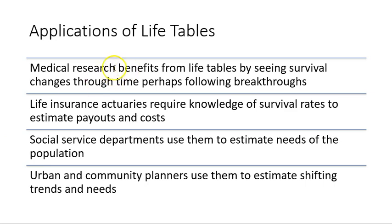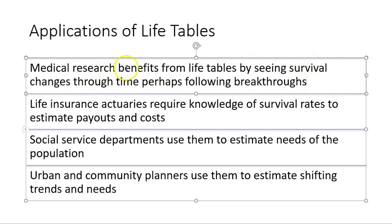Life tables are used in the medical field. Medical research might want to look at how survival rates have been altered after the introduction of a life-saving drug. Of course, life insurance actuaries have a pretty lucrative occupation. Their job is to calculate survival rates based on different circumstances as they underwrite life insurance policies, actually predicting the odds of members of a population surviving, and then adjusting the premiums for those life insurance policies based on those predictions.